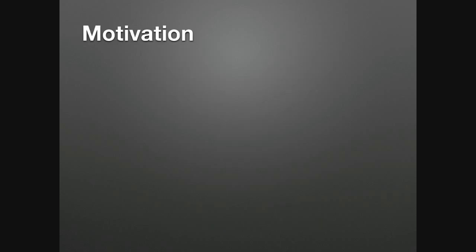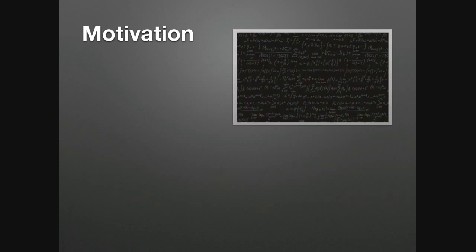Let's talk about the motivation. In my opinion, there are two reasons to build automatic tools. The first is that pen-and-paper proofs are tedious, really hard to write, difficult to review, and can contain errors. In practice, there are examples of published papers with invalid proofs — here I give a reference to a paper where you can find an invalid proof in the generic group model.